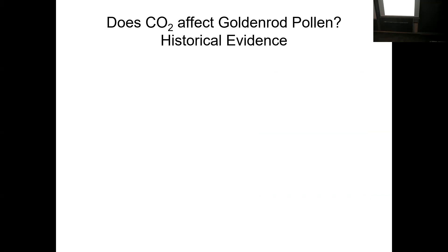That's a tough question because bees consume pollen from a lot of different sources. So we chose goldenrod — Solidago canadensis — because it's one of the last sources of flowers that bees see before they overwinter.